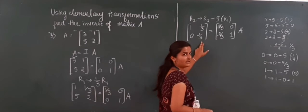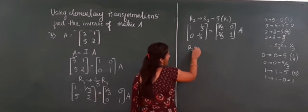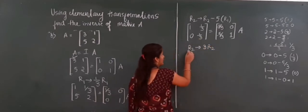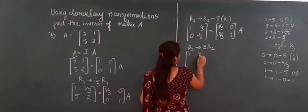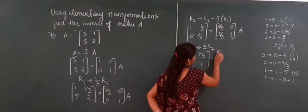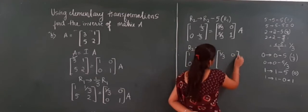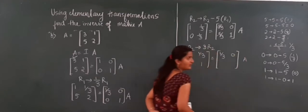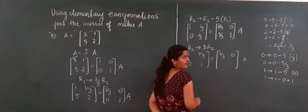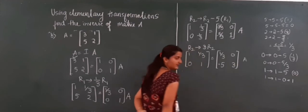So I have to convert 1/3 to 1. I will multiply R2 by 3: R2 changes to 3×R2. If I multiply 3 here I get 1. So the left matrix becomes: 1, 1/3, 0, 1. For the identity side R2: -5/3 × 3 = -5, and 1 × 3 = 3.